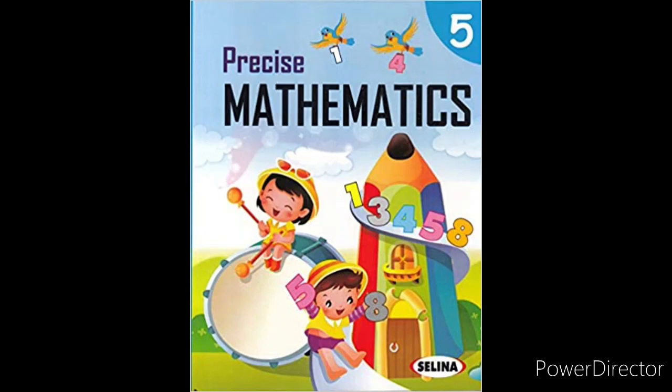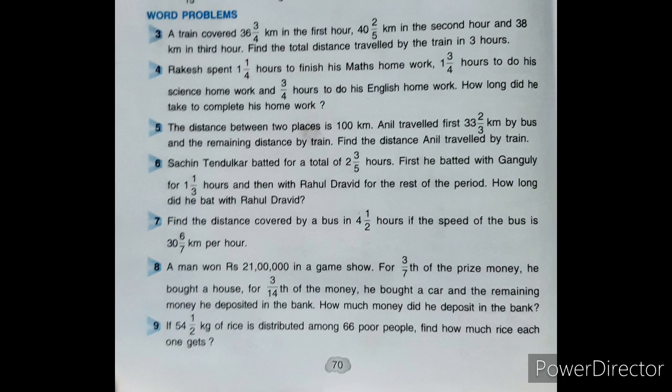Welcome class 5. In this video we will start exercise 9D word problems. First word problem dekho, sum number 3: a train covered 36 and 3/4 kilometer in the first hour, 42 and 2/5 kilometer in the second hour, and 38 kilometer in the third hour. Find the total distance travelled by the train in 3 hours.